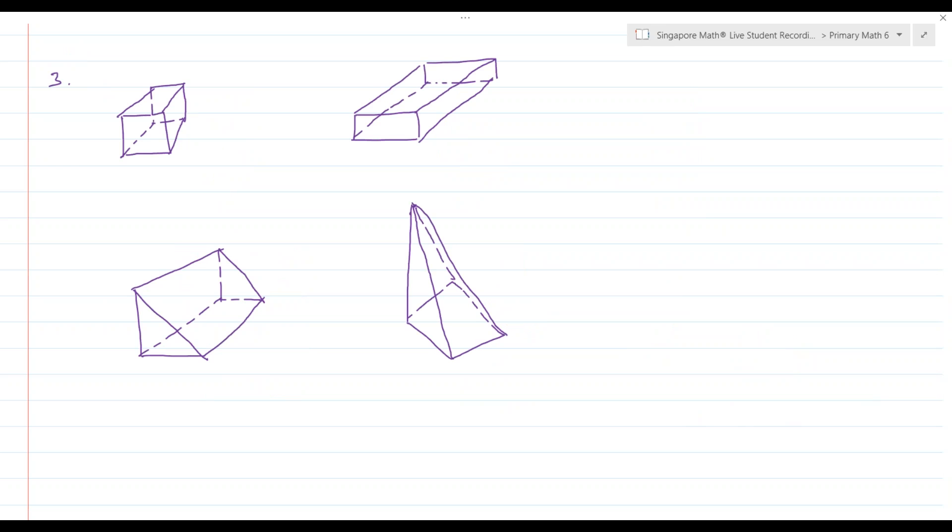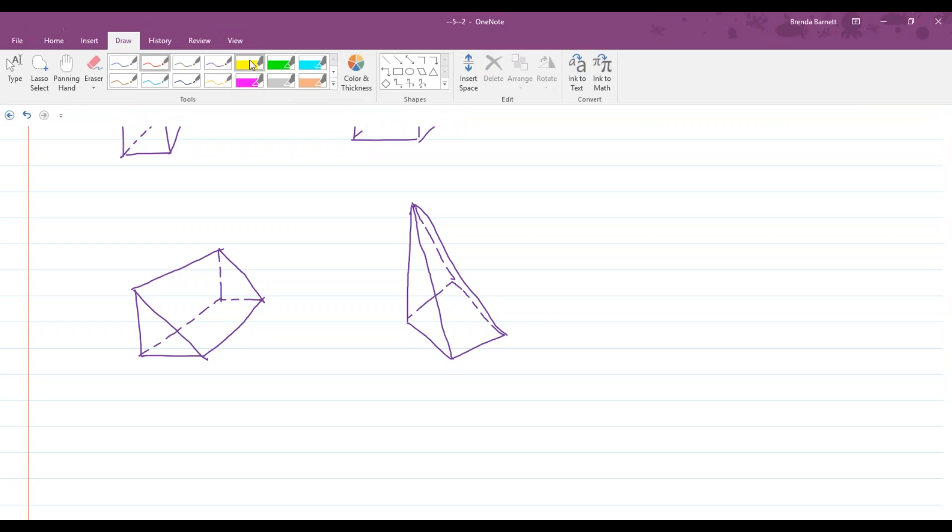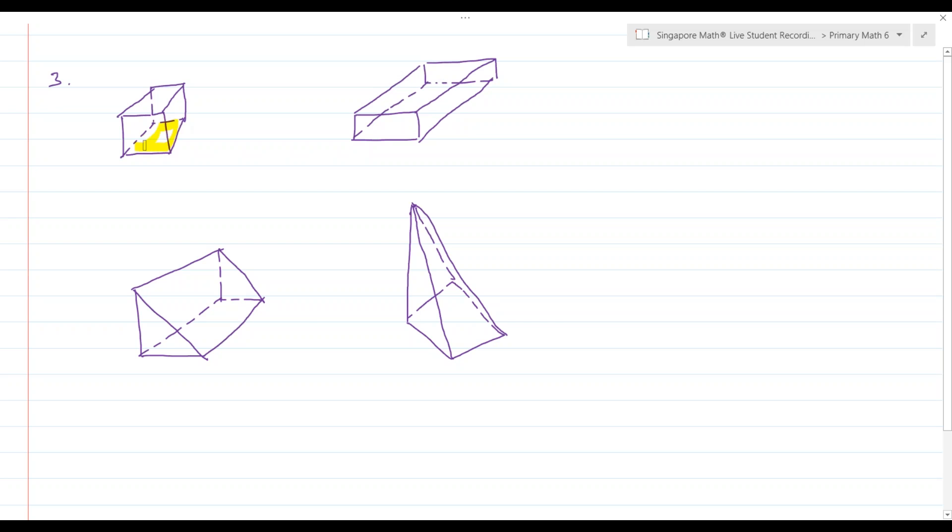Number three, the figures below show some solids. Which one is different from the others? Explain why. There's a lot of things that are the same about these. They all have a base that is a rectangle. They could all say these have a base, it's a rectangle.